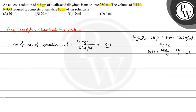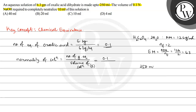So 0.1 equivalents of oxalic acid dihydrate is present in 250 ml. Now normality is the number of gram equivalents per liter — that is number of gram equivalents divided by volume of solution in liters. The number of gram equivalents is 0.1, and the volume is 250 ml, which equals 250 divided by 1000, that is 0.25 liters.